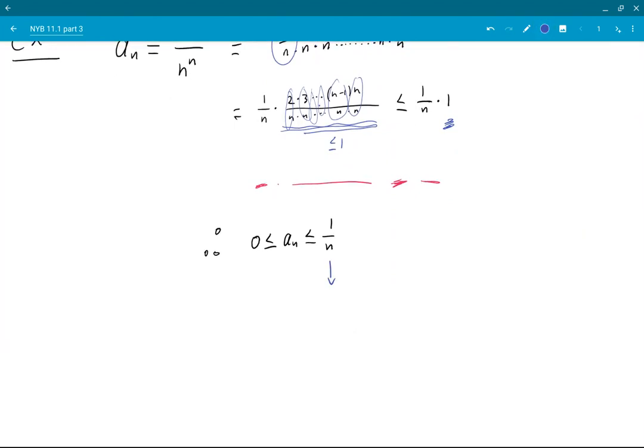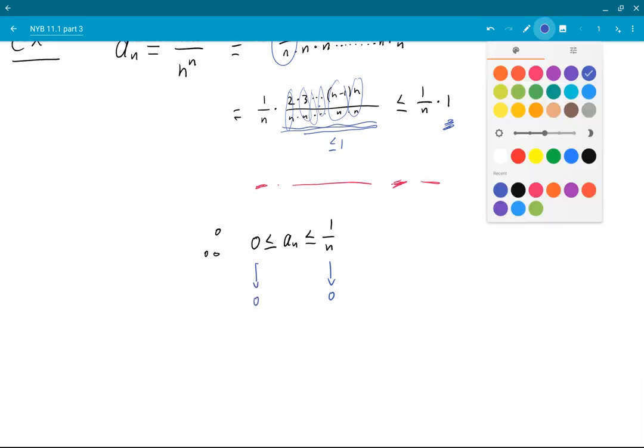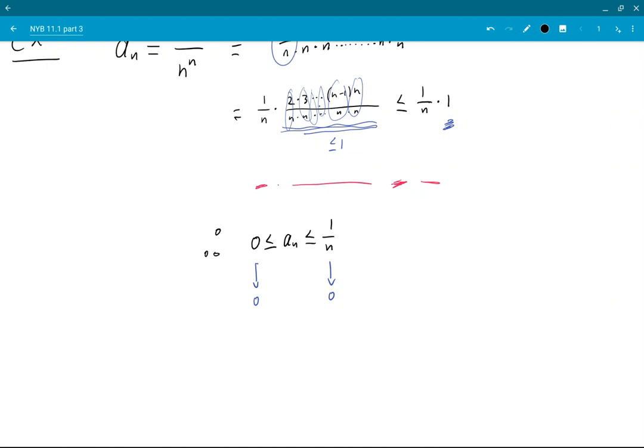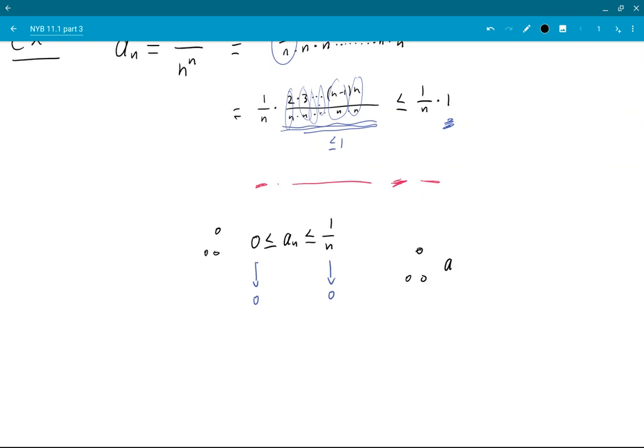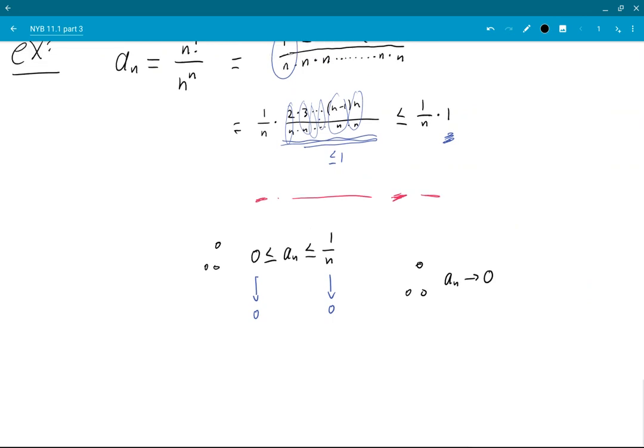So now the limit here is 0, and the limit here is also 0. So therefore the limit of an is 0.